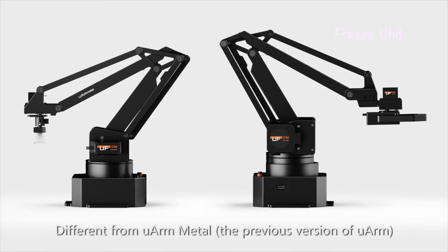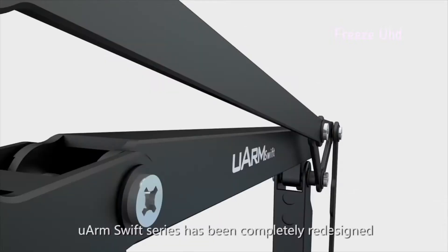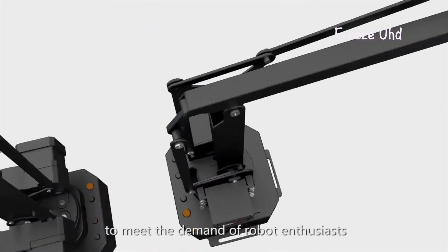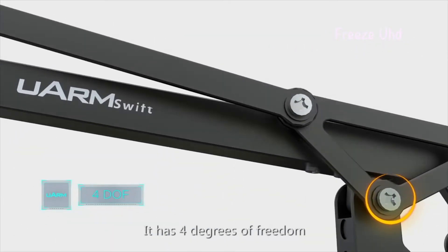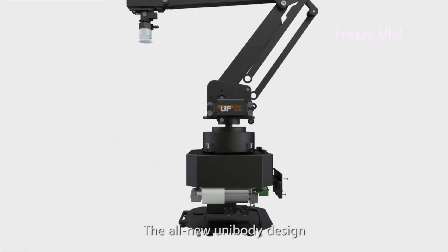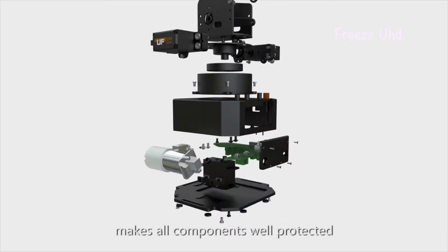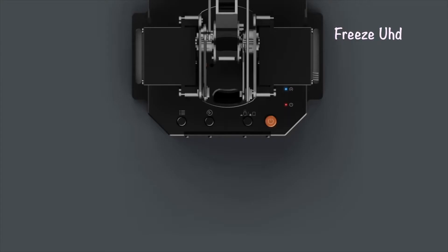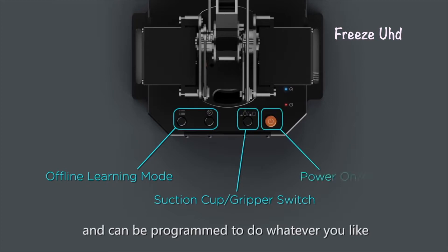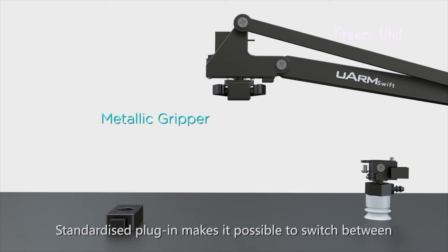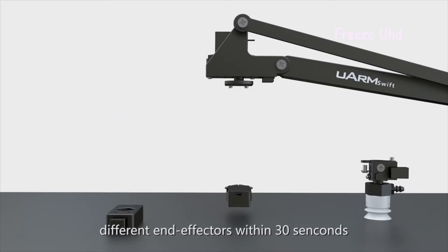Different from U-Arm Metal, the previous version of U-Arm, U-Arm Swift series has been completely redesigned to meet the demand of robot enthusiasts. It has four degrees of freedom and enhanced moving range. The all-new unibody design makes all components well-protected and no wiring is required. What's more, buttons on the base control built-in functions and can be programmed to do whatever you like.